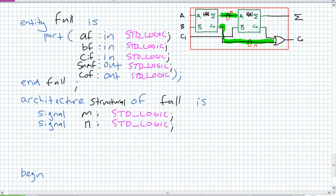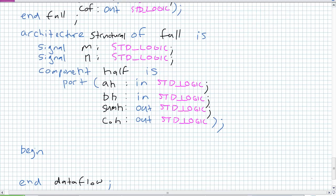The component we're going to use is obviously half adder. I have to tell this architecture statement that's the part I'm going to use. The description is 'component half is'. Do another port statement — it's almost like the entity we had previously defined. What are the ports for the half adder? Just go look at the entity statement for the half adder and write it down. That's the awesome thing about copy and paste — control C, control V. Now go ahead and end that component: 'end component half'.